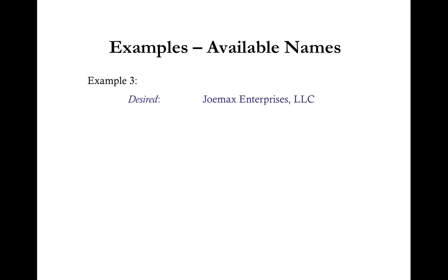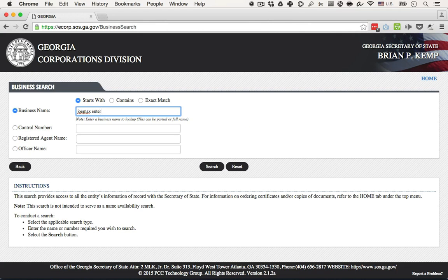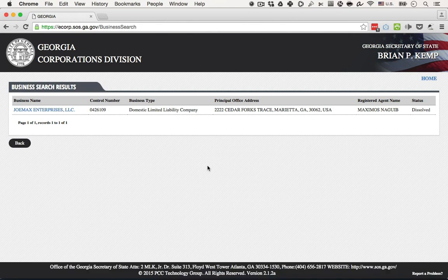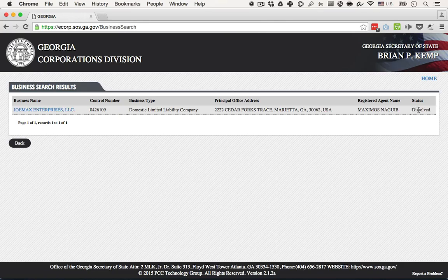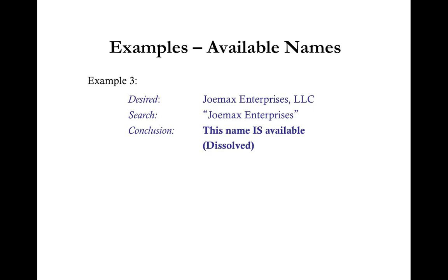Another example: desired LLC name is Joe Max Enterprises LLC. Searching the database returns a result — Joe Max Enterprises LLC — but its status is dissolved. Remember, a dissolved status means the name is available for use. So Joe Max Enterprises LLC is available because the prior entity has been dissolved.